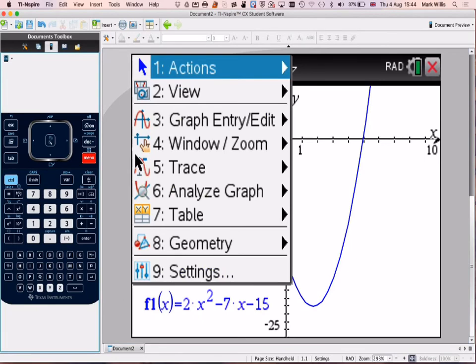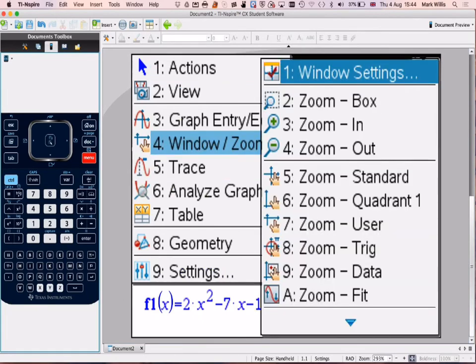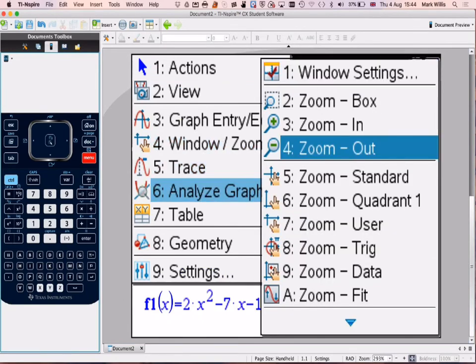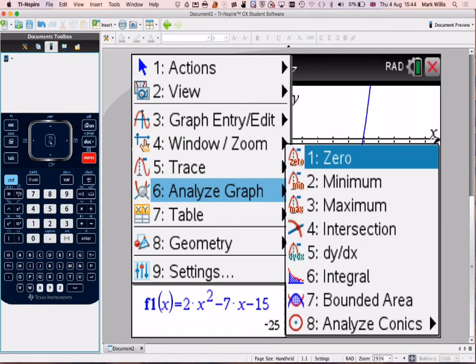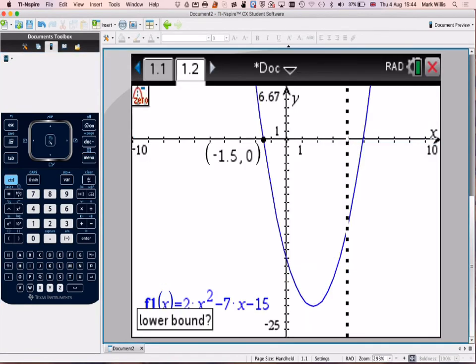And then to get the other one, we just repeat it. Window, zoom. So number 6, analyze the graph, number 1, zero. We go slightly to the left of that one there, and then to the right, and we get the other answer, which is 5, zero.